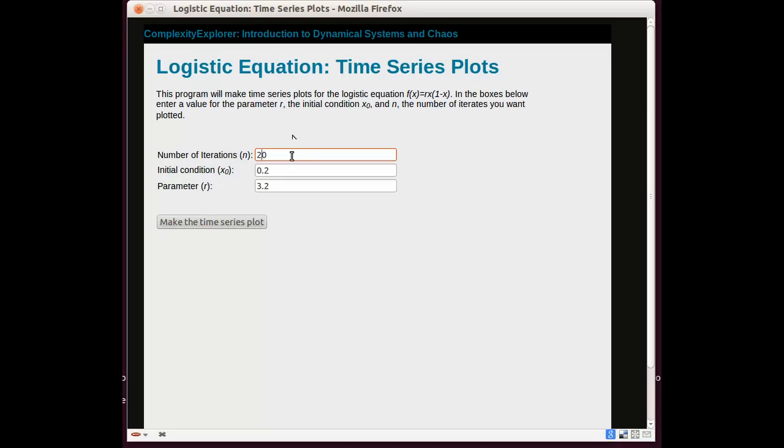Next, you need to choose the initial condition. I'll stick with 0.2, that's the default. And then you need to choose the growth parameter, R. I'll use 1.5 because this was the example that I did at the end of the previous section.